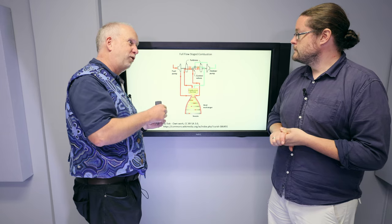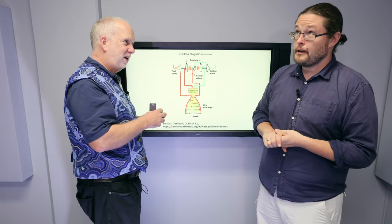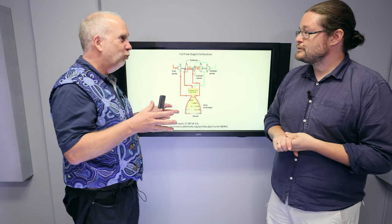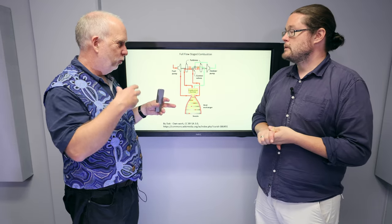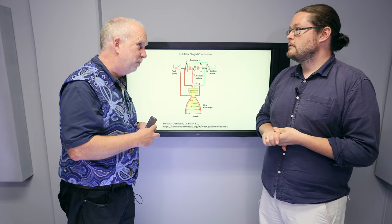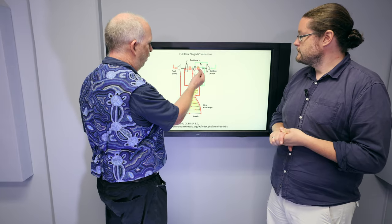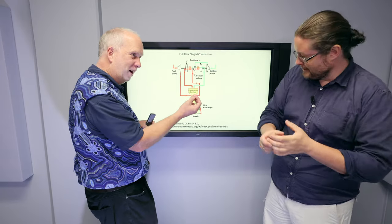You burn all the fuel with a little bit of oxidizer. So that means you need an unequal match to burn it all. Because the match is uneven, most of it remains unburnt, but a small fraction is burnt. And on the other side, you burn large amounts of oxidizer with a small amount of fuel.